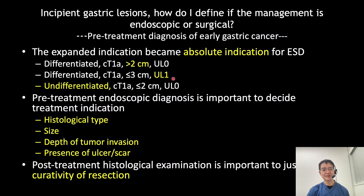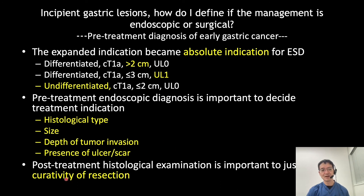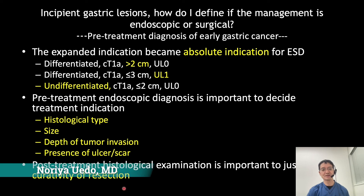In summary, the previous expanded indication became absolute indication in the latest guideline. Pre-treatment endoscopic diagnosis of histological type, size, depth of tumor invasion, and presence or absence of ulcer or scar is important to decide treatment indication. Post-treatment histological diagnosis is also important to justify the curability of the resection.